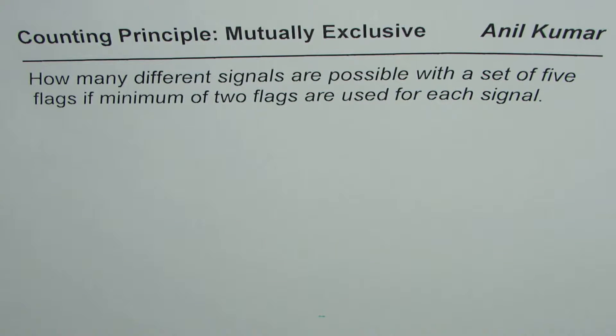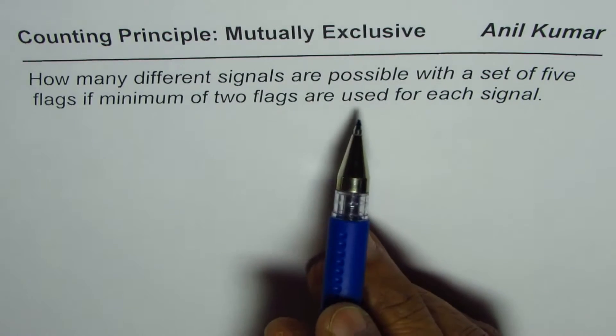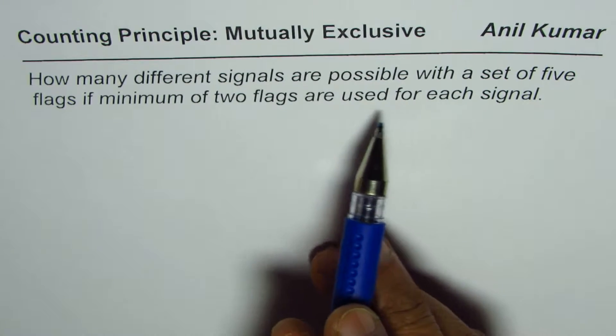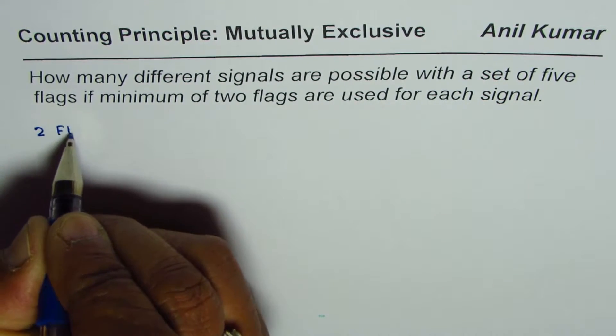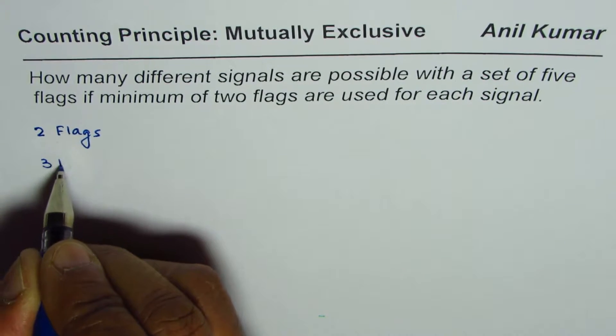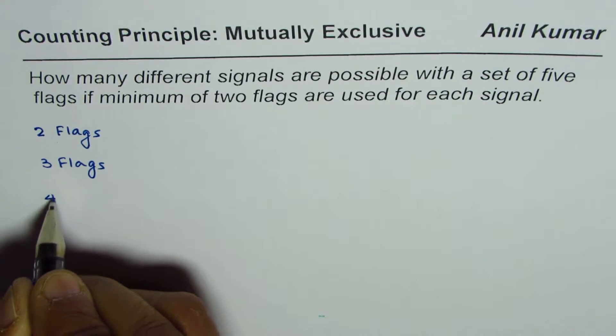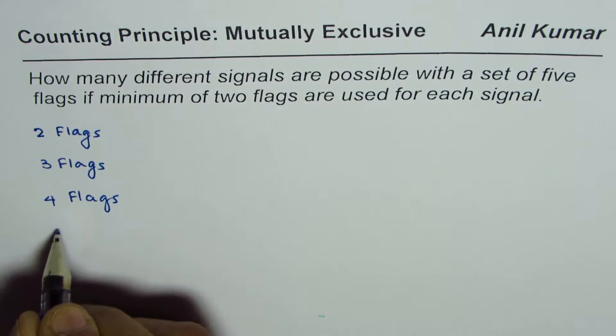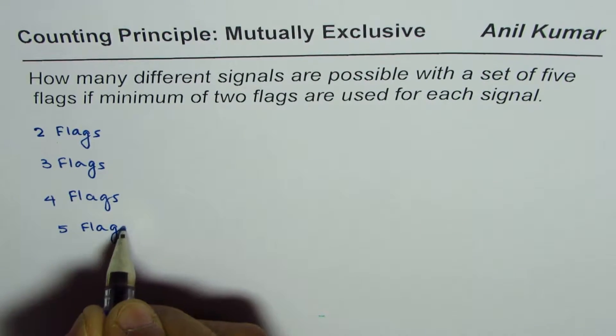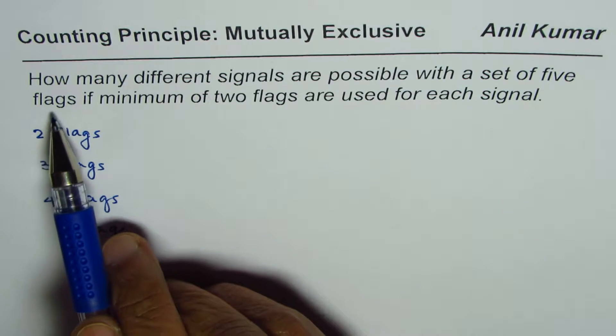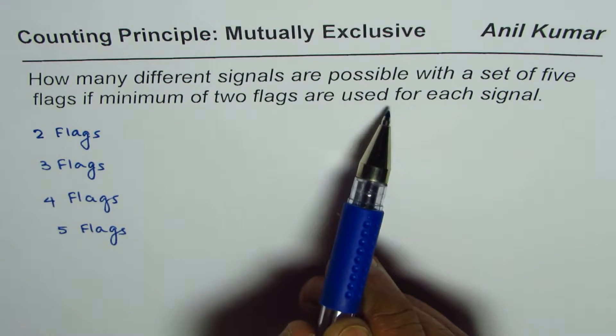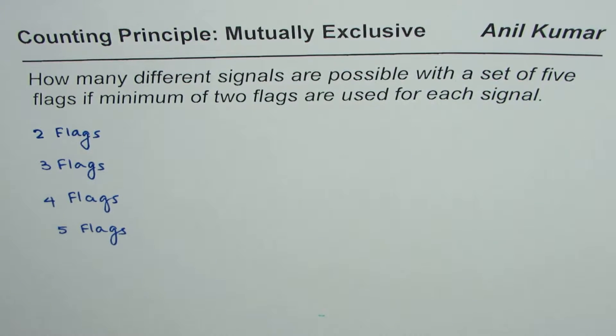When we say minimum of two flags are being used, that means we could have a situation where you have two flags, you would have three flags, four flags, or five flags. So how many different signals are possible with a set of five flags if minimum of two flags are used for each signal?